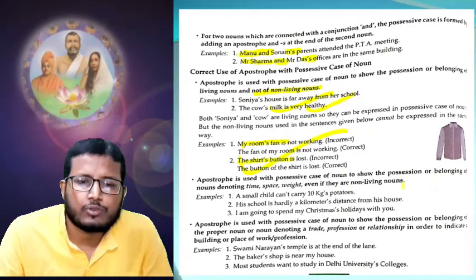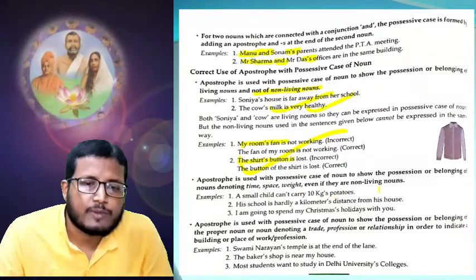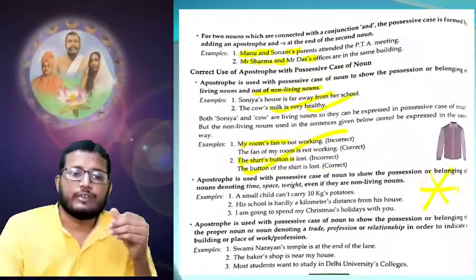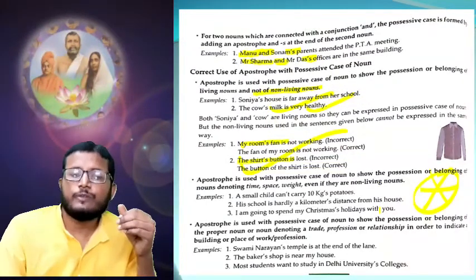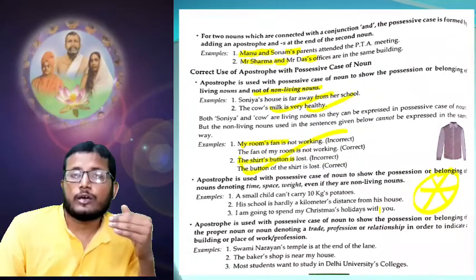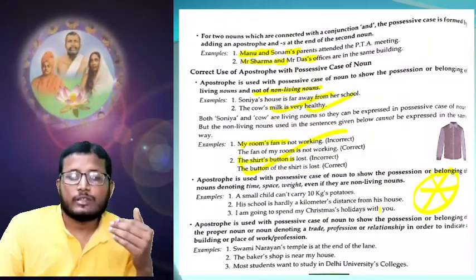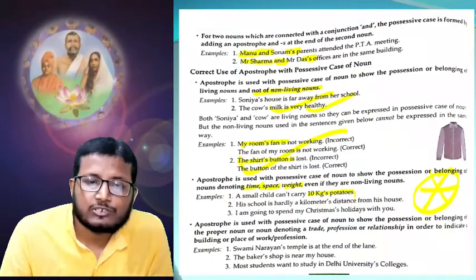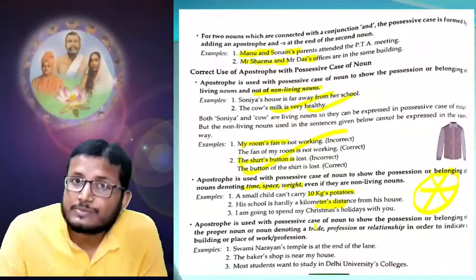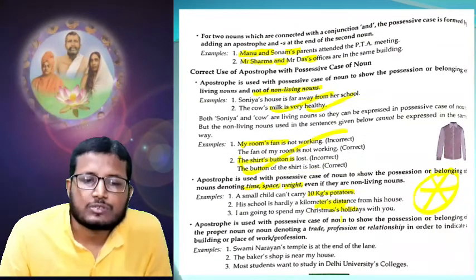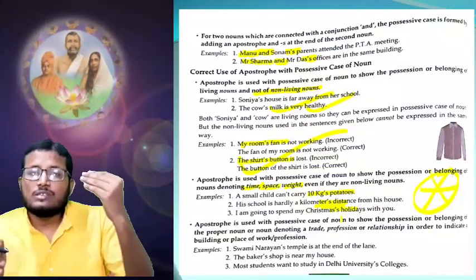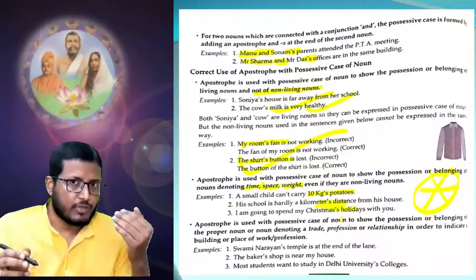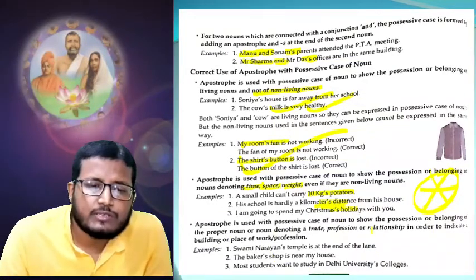However, apostrophe is used with possessive case of noun to show possession or belonging of nouns denoting time, space, or weight — even if they are non-living things. This is very important. In these examples we show apostrophe with non-living nouns in selected sectors: time — 'this year's plan'; weight — 'a small child can't carry 10 kg's worth of potato'; space — 'his school is hardly a kilometer's distance'.